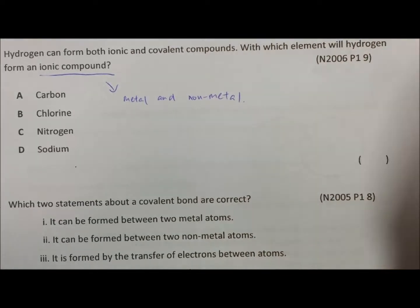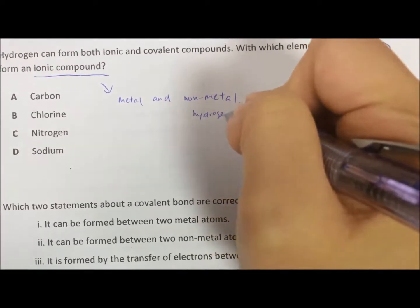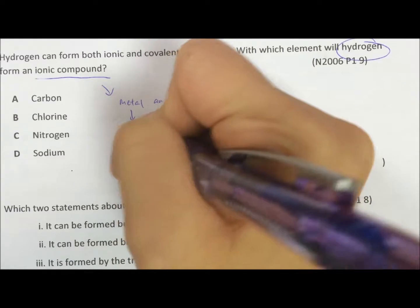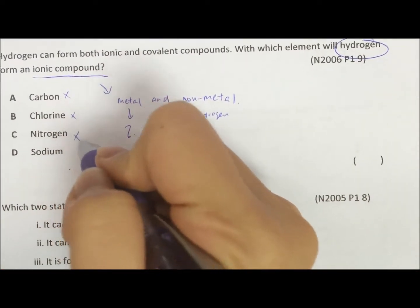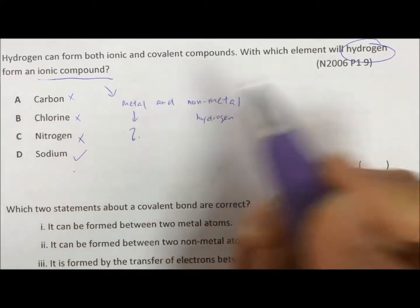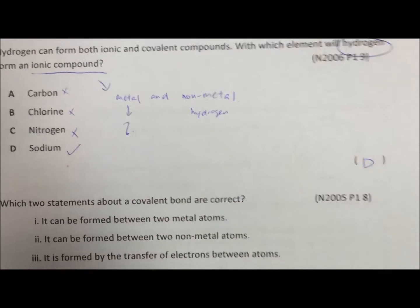So what is hydrogen? Hydrogen is a non-metal. So if hydrogen is a non-metal, you need a metal to form ionic compound. So only option D, sodium, is a metal. You can refer to your periodic table.